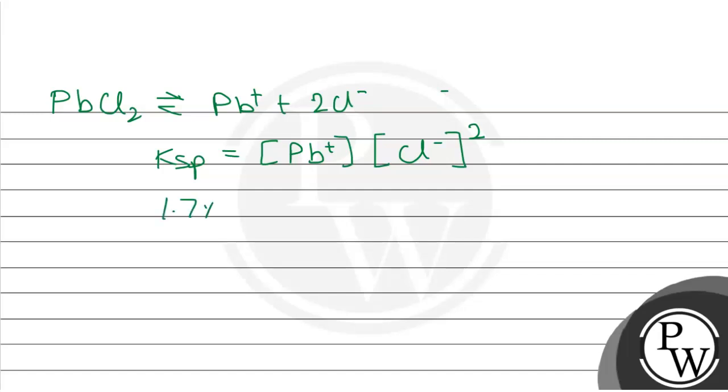From here, Ksp value was given as 1.7 × 10^-5, and this equals Pb2+ times 0.1 squared. After cross multiplication, we take 1.7 × 10^-5 divided by 0.01 after squaring.